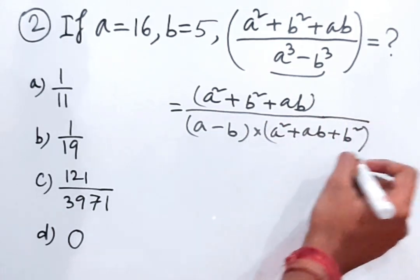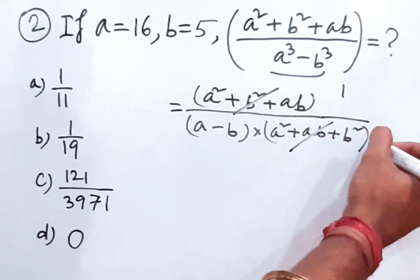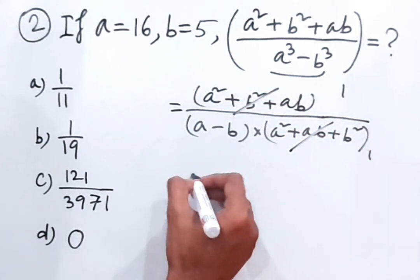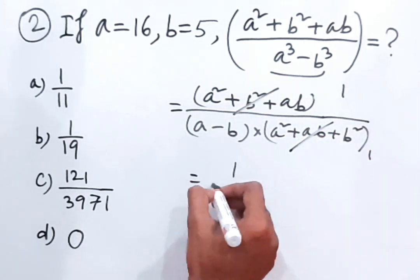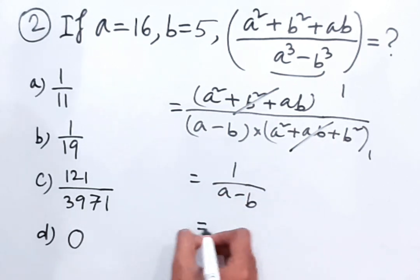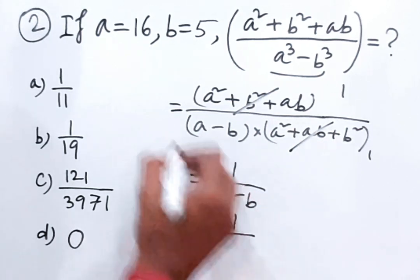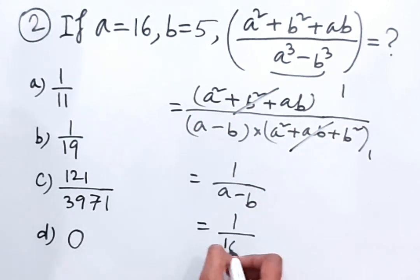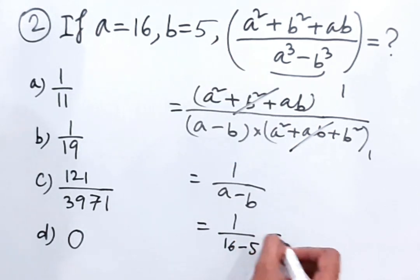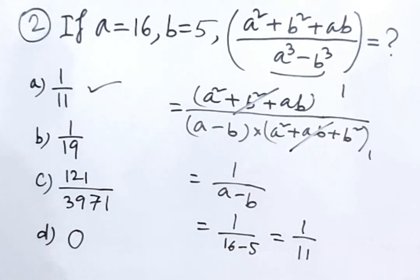We can cancel (a² + ab + b²) from numerator and denominator, leaving 1/(a - b). Putting in the values, a = 16 and b = 5, so the answer is 1/(16 - 5) = 1/11. So A is the answer.